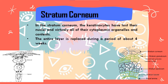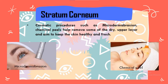The entire stratum corneum layer is replaced during a period of about 4 weeks. Cosmetic procedures such as microdermabrasion and chemical peeling help to remove some of the dry upper layers and aim to keep the skin healthy and fresh.